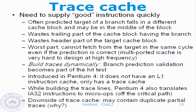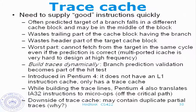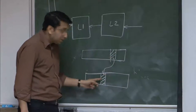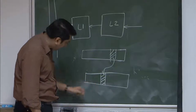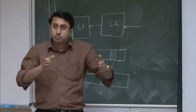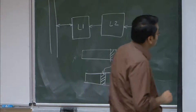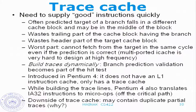What Pentium 4 did was it built traces dynamically, and the branch prediction validation becomes part of the hit test. On the fly, whenever you have a branch instruction, you find the target and prepare a trace of instructions where the target instruction appears right after the branch. You are preparing these trace cache blocks as and when you encounter branches and targets. Pentium 4 did not have an L1 instruction cache — it only had a trace cache. While building the trace lines, Pentium 4 also translates the IA-32 instructions to micro-operations, off the critical path, which saves a lot of decoding time.